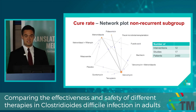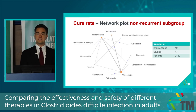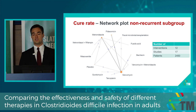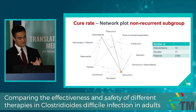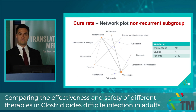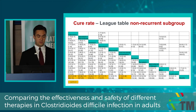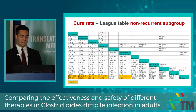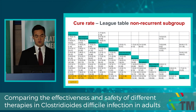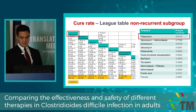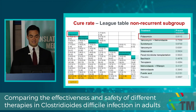Now let's see the situation in the non-recurrence subgroup. For this analysis, we included only those studies with patients who suffered from non-recurrent C. diff infection. We included 12 interventions from 17 studies, and more than 10,400 patients were included. In this league table, fidaxomicin became first. However, it's only significant compared with placebo. According to our league table and P-score, it's not a clearly mathematically significant result.